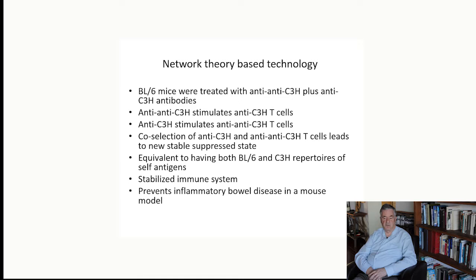This brings us to a network theory-based technology. Network immunology is particularly exciting. We treated black 6 mice with anti-anti-C3H and anti-C3H antibodies. Each of those stimulated a complementary population of T cells. Because they are being stimulated by complementary antibodies, this led to a new stable suppressed state in which the stimulated populations co-selected each other. The resulting mice had been changed in a way that was similar to them having both black 6 and C3H properties of self-antigens.